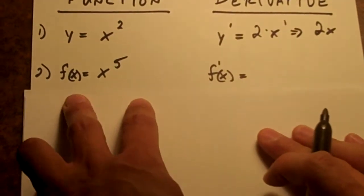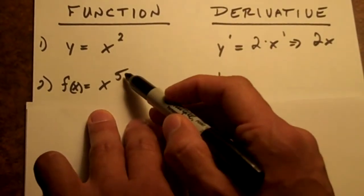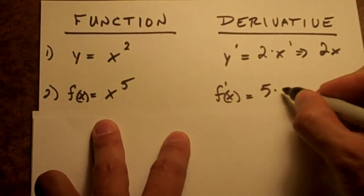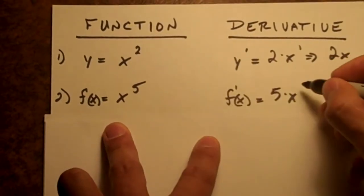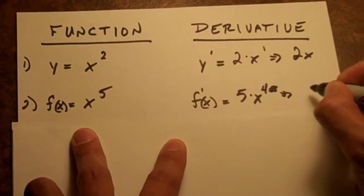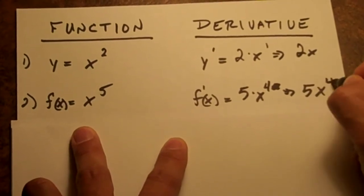Same thing. Just a different notation. We're going to take this number up here and multiply it out front. 5 times x and then subtract 1. 4 minus... Oh, 4. So we come out with 5x to the 4th.